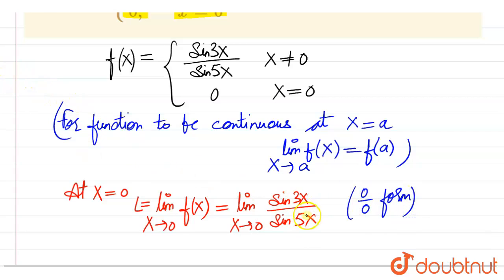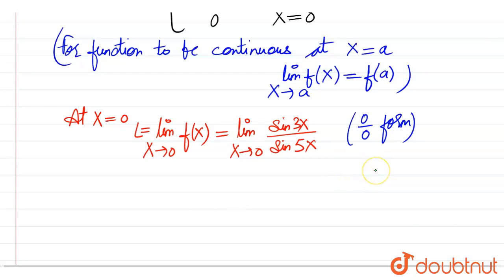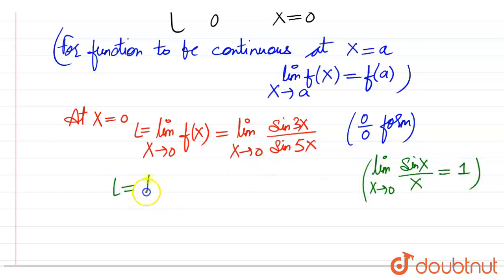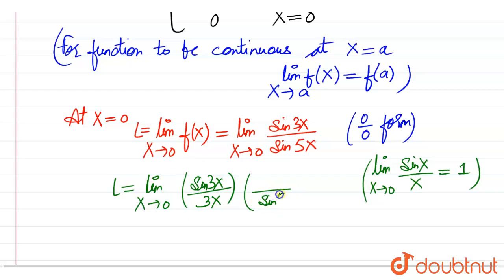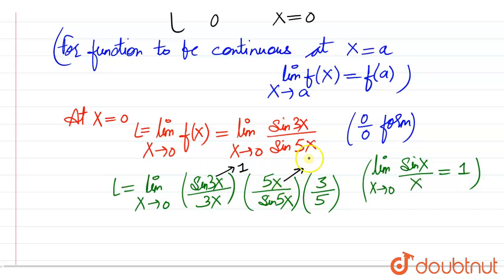So we cannot directly put x equal to 0. We will use the identity that limit x approaches to 0 of sin x by x is equal to 1. So we write this as limit x approaches to 0 of sin 3x divided by 3x, divided by sin 5x divided by 5x. We divide by 3 and multiply by 3, and divide by 5 like this, so x gets cancelled out. Each term becomes sin 0 by 0 form equal to 1, so we get the limit equal to 3 by 5.